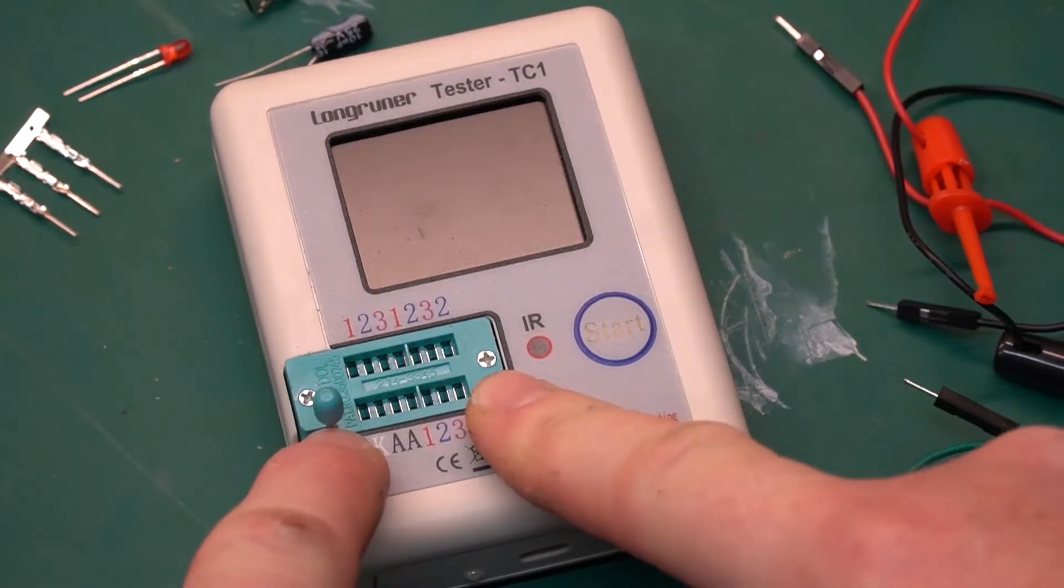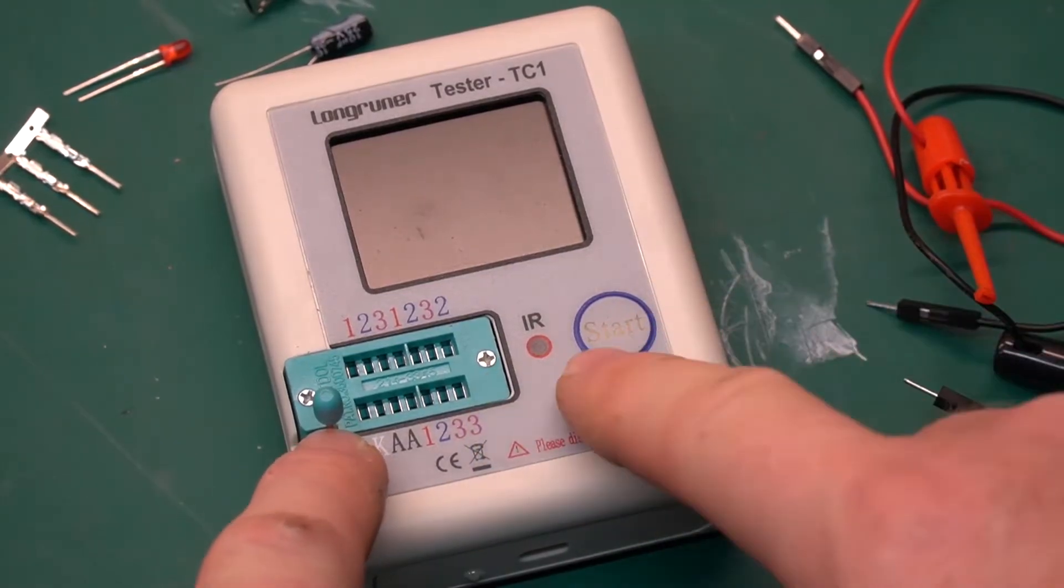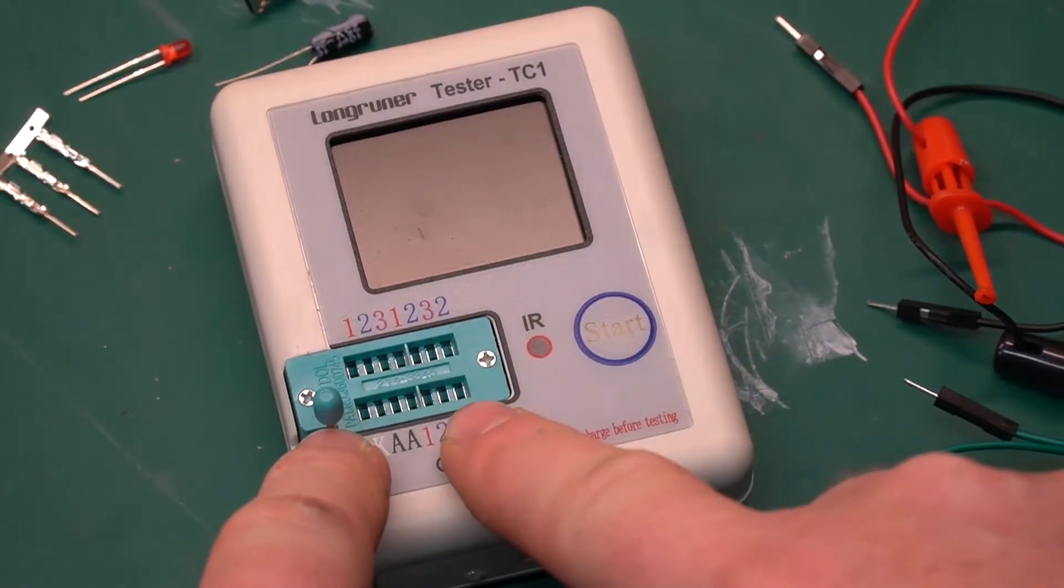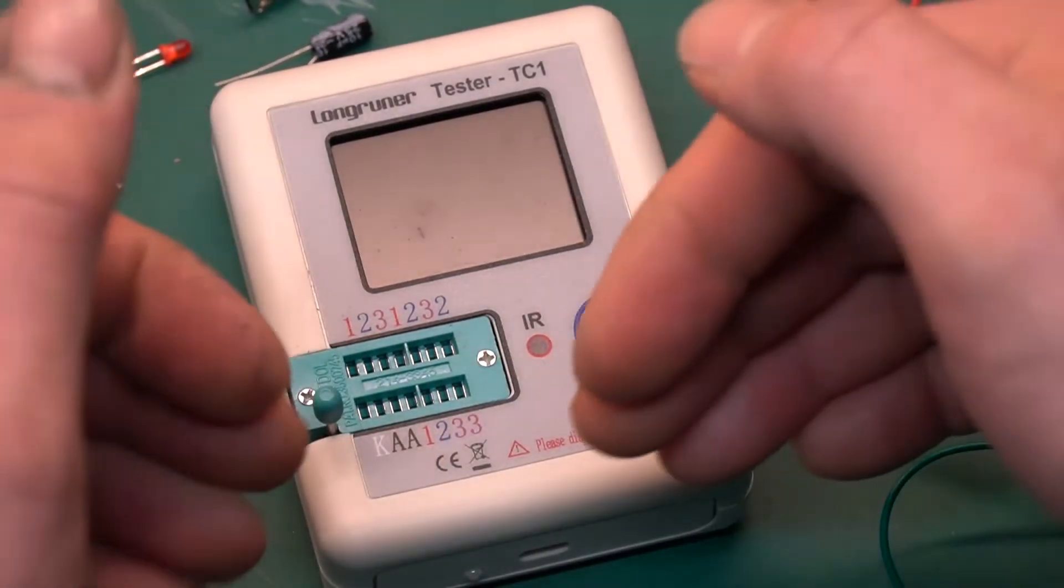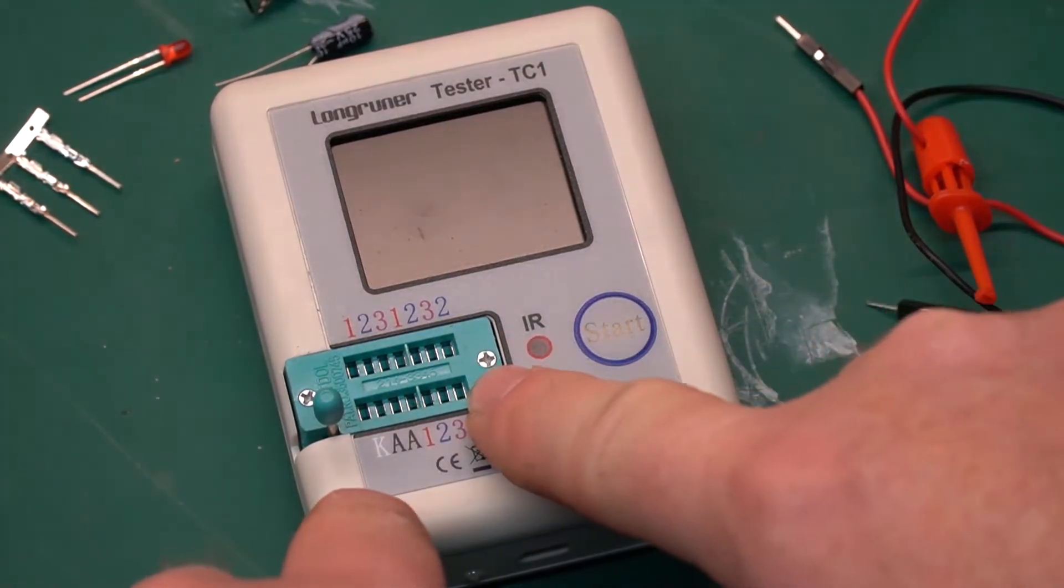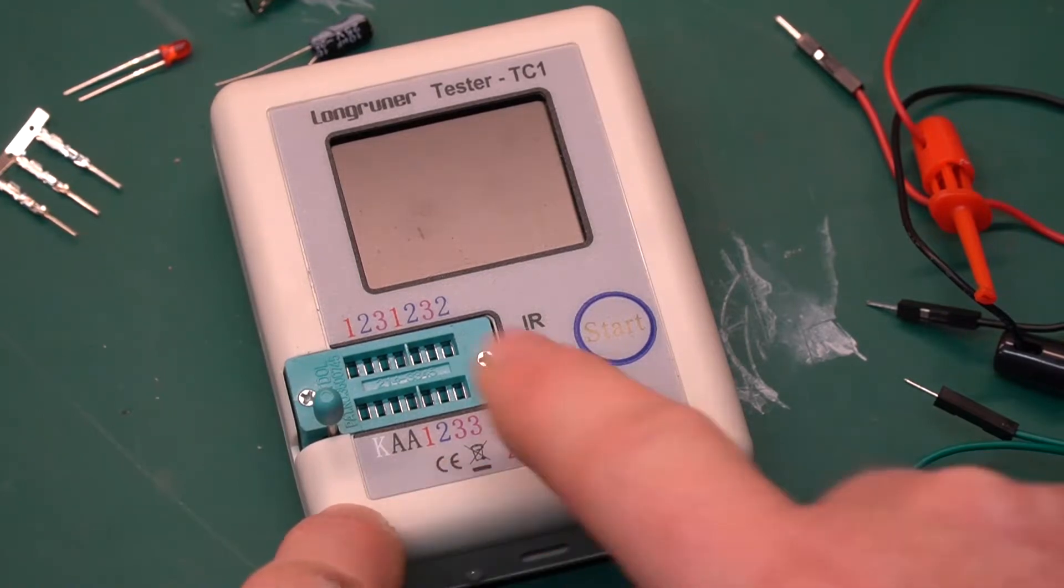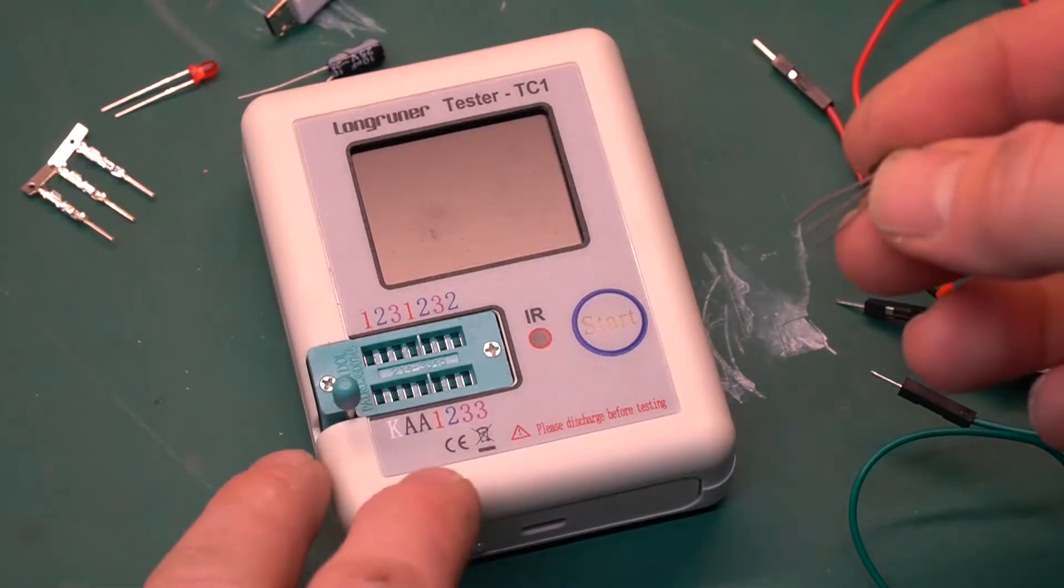You can use any three inputs that you want to. It's smart enough to figure out what's plugged into it. Those inputs are also repeated across the ZIF socket, so if you have a larger component that you need the space on, you could just pick one across the board and connect it. There's some other pins down here: K, A, and A, and those are only used if you're testing a Zener diode. Everything else gets plugged into pins one, two, and three. Now let's go ahead and put this thing to the test.